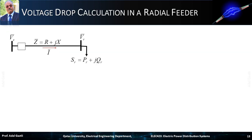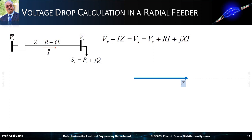Let's consider the feeder defined by its impedance Z equals R plus jX. The sending end voltage is V_S and the receiving voltage is V_R. The load consumes an apparent power S_R equals P_R plus jQ_R, where P_R is the active power and Q_R is the reactive power. The current in the feeder is I. Based on KVL, we can write that V_R plus IZ equals V_S, that equals V_R plus RI plus jXI.